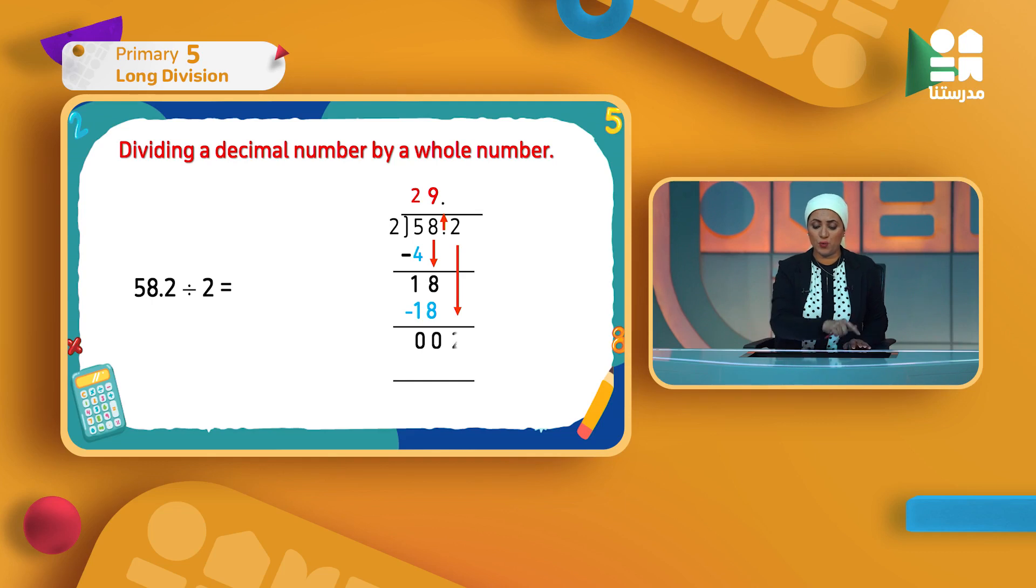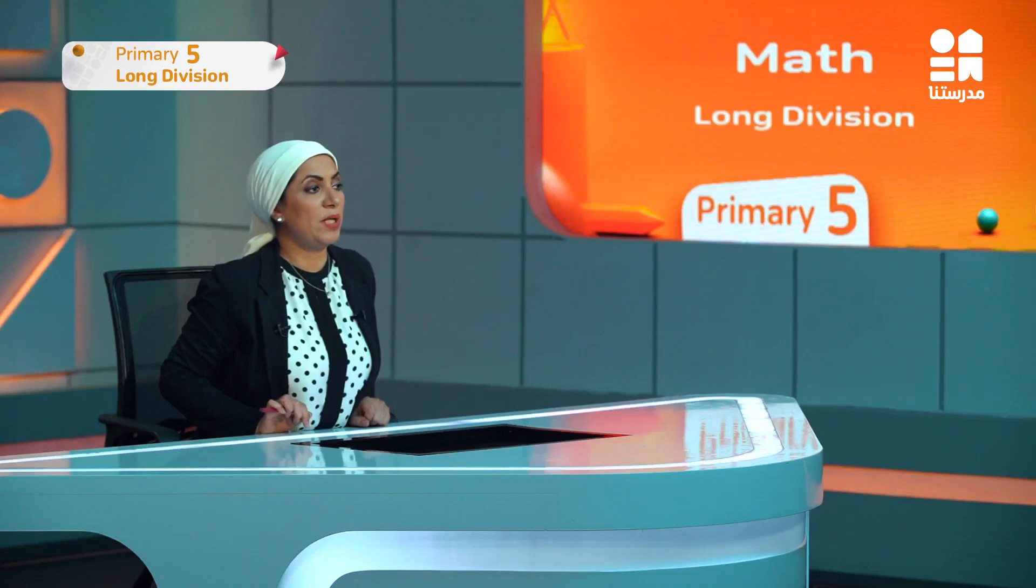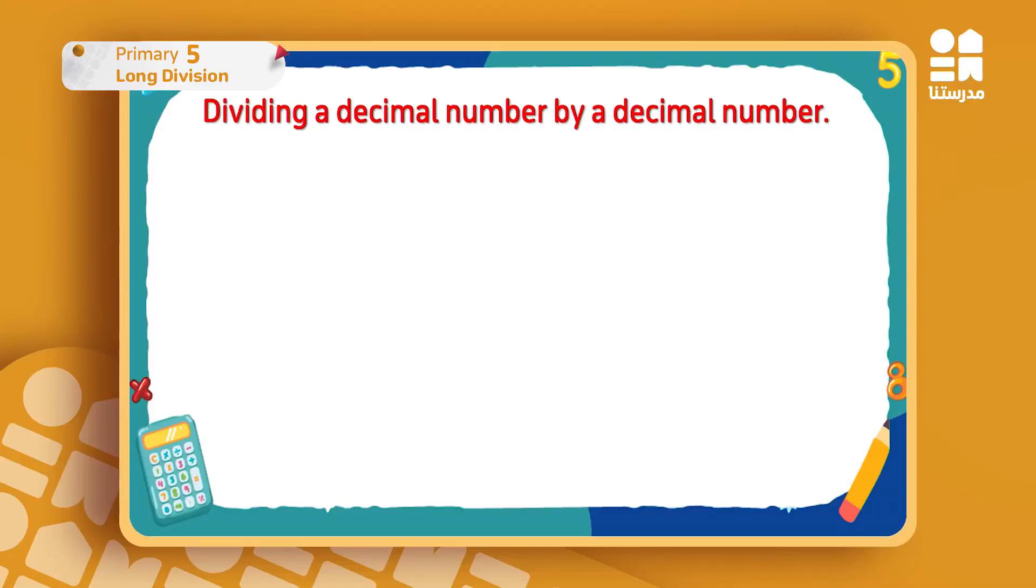The decimal point goes up. I'll continue as if they are two whole numbers. Then I will bring down the 2. I have 2 only, and I have 2 in the divisor. 2 divided by 2 is 1. I'll put the 1 after the decimal point and I multiply it by 2, it gives me 2. Then I subtract: 2 minus 2 is 0. That's it. The same method exactly. The whole point is that I consider the decimal point doesn't exist until I meet it while working. When I meet it, I put it in the place where I found it, and that's it.